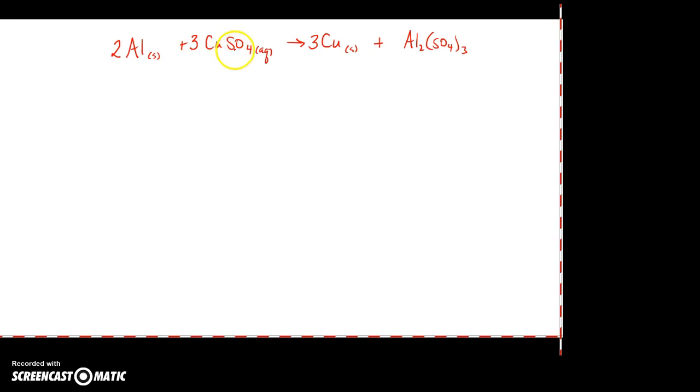I have three sulfurs on my reactant side, and I have three sulfurs on my product side. I have 12 oxygens on my reactant, and I have 12 oxygen on my product. So that works out fine too. So those are some easy tricks that you can use.